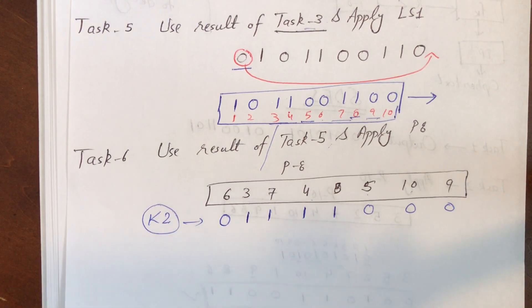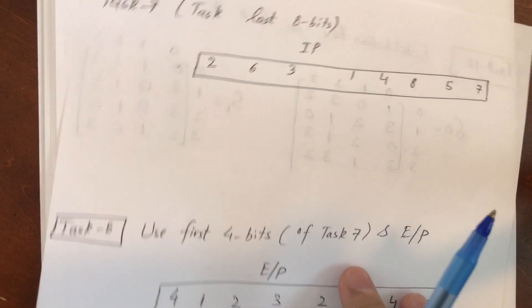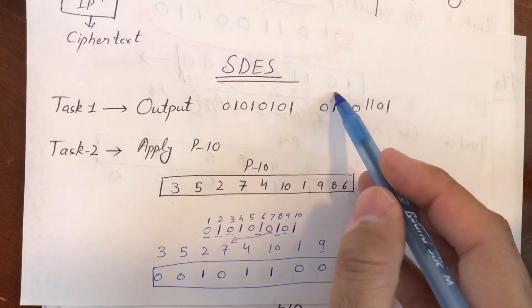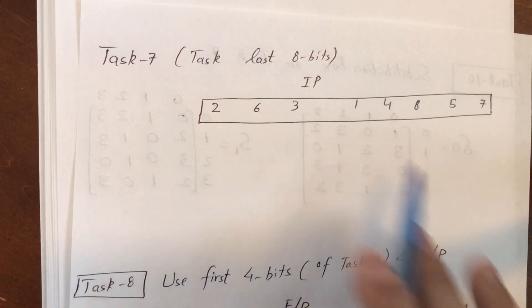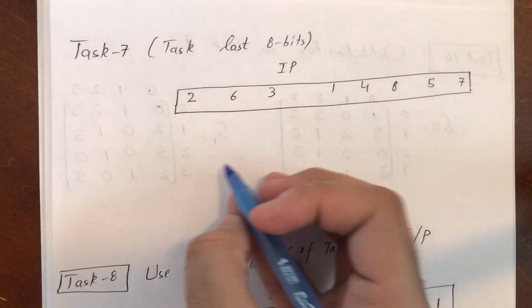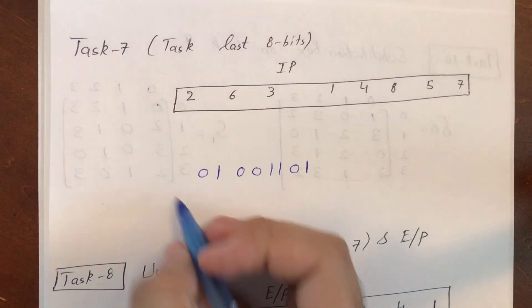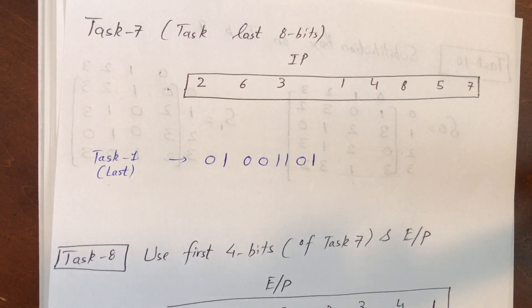K1 and K2 are now both ready. That's how Tasks 1–6 are done. For Task 7, take the last 8 bits — go back to your Task 1 output and take those 8 bits — and apply the Initial Permutation (IP). My Task 1 output last 8 bits are: 0 1 0 0 1 1 0 1.